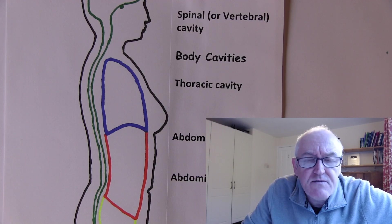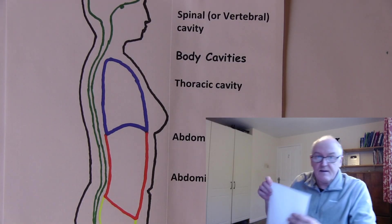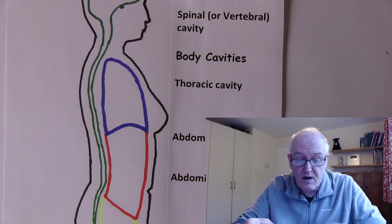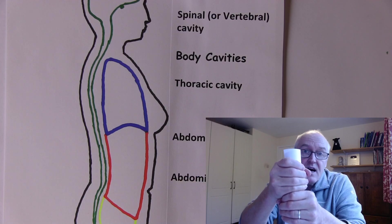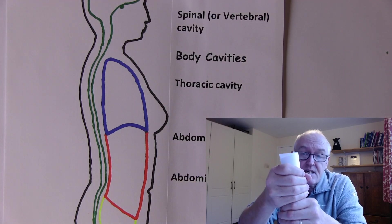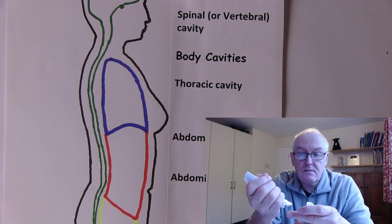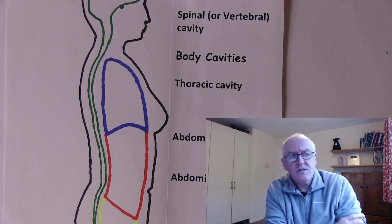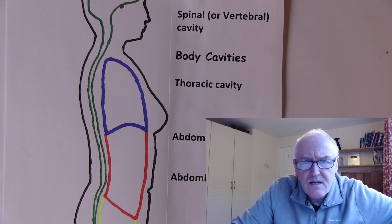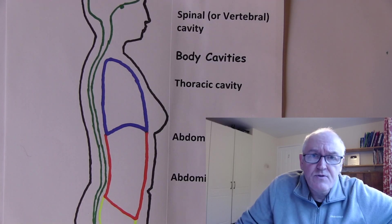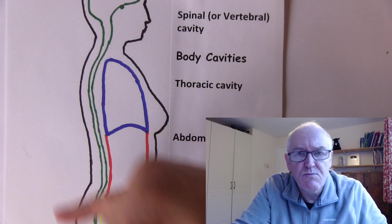This is why injuries to the vertebrae are so important. If the vertebrae are damaged and the patient's neck or back is moved in the wrong way, it can transect the spinal cord — turning a serious vertebral injury into a catastrophic one. Whatever level the spinal cord is transected at, the patient will not feel or move anything below that level ever again.